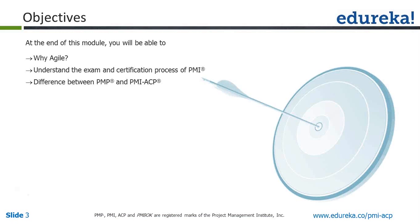The high-level objectives of this webinar would be: why should we go for agile, why not the traditional waterfall model, what is the exam pattern for PMI-ACP, what qualifications are needed for PMI-ACP, the difference between PMP and PMI-ACP, and also how CSM and PMI-ACP are different and how you would benefit from PMI-ACP if you are already a CSM.